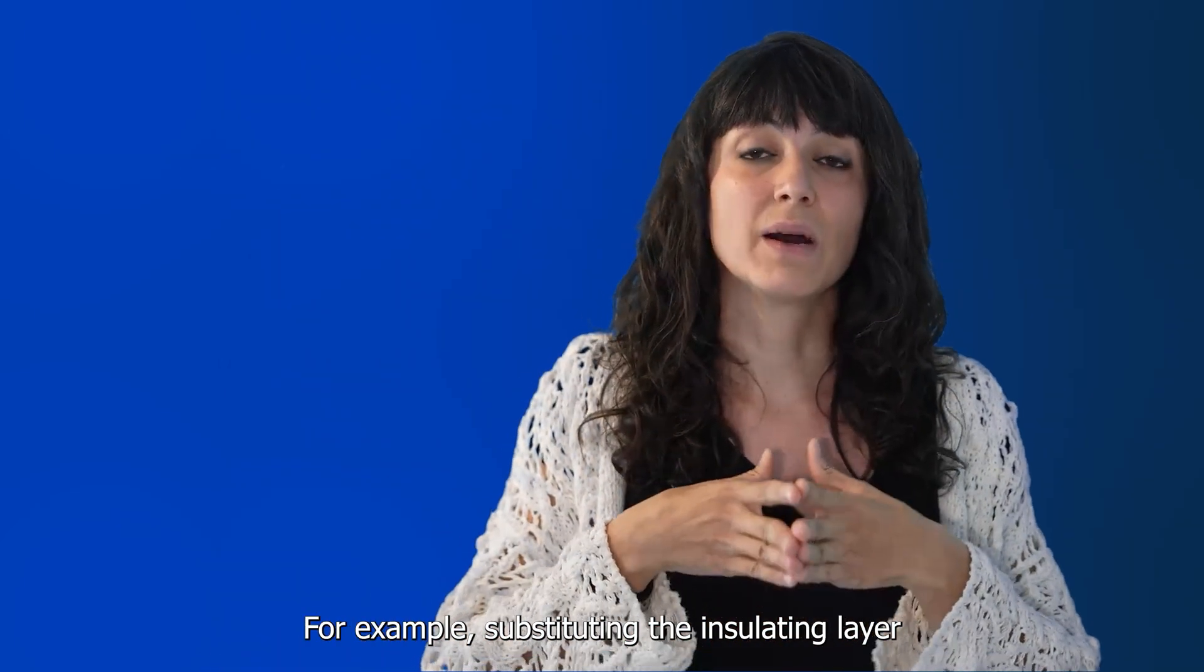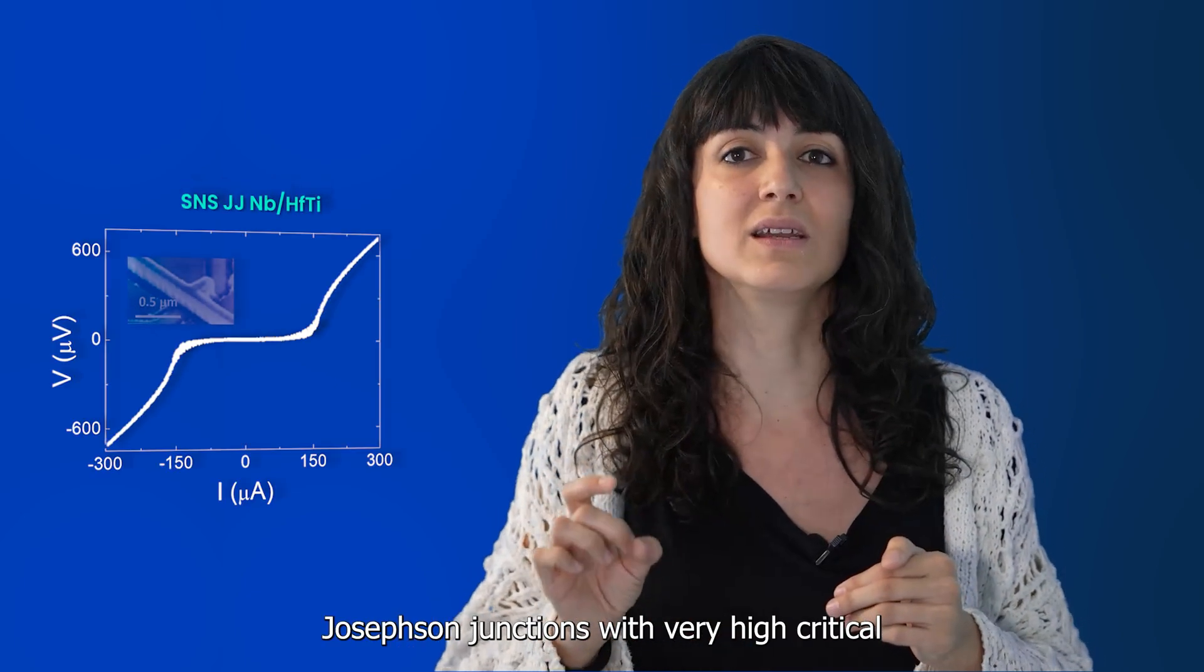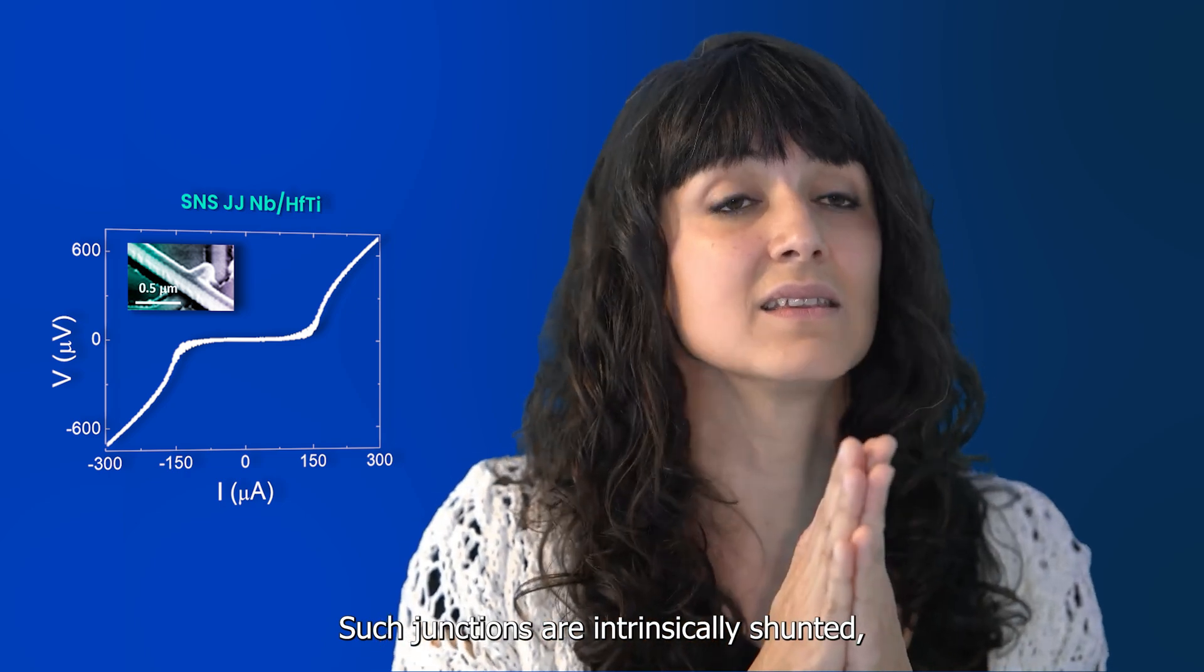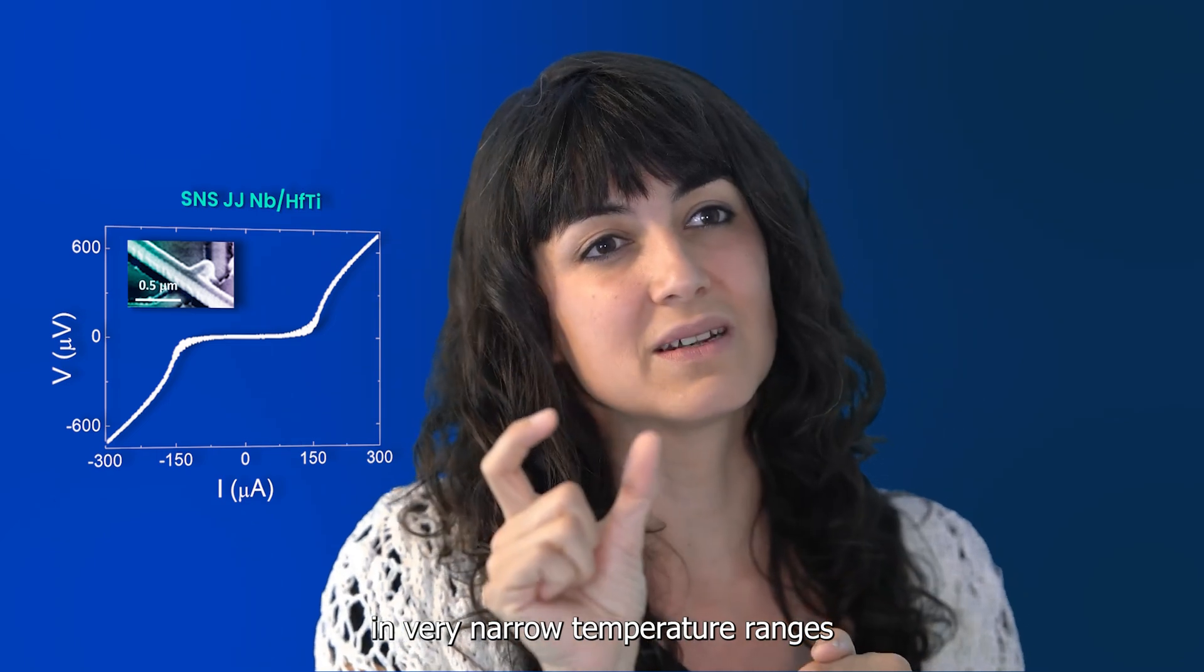Such junctions have very high critical current densities of the order of 10 to the 5A per centimeter squared at 4K. Such junctions are intrinsically shunted, making them non-hysteretic, but only in very narrow temperature ranges.